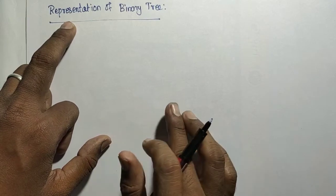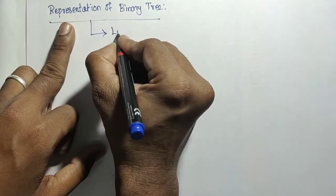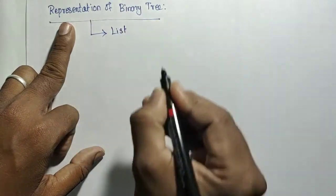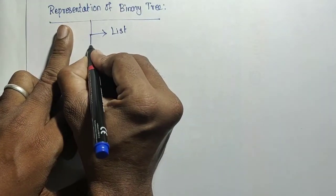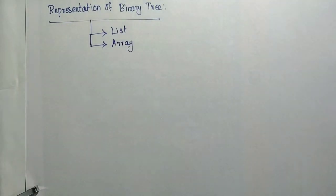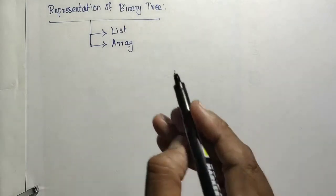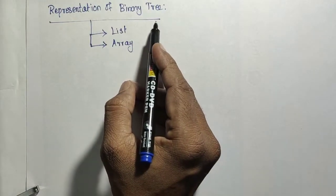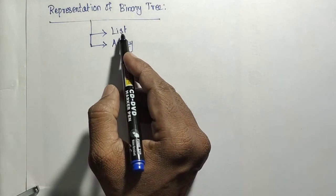We already know that the tree can be represented using list representation. The binary tree has one more option — it can also be represented using an array. So either we can use the list or the array for representing the binary tree. For some applications, we may use the array for constructing the binary tree, and for some applications, we may use the list.